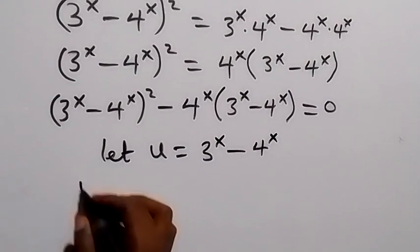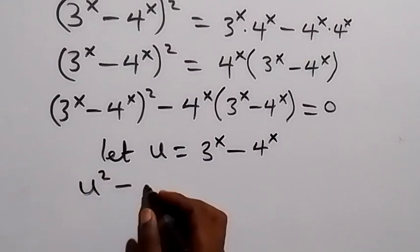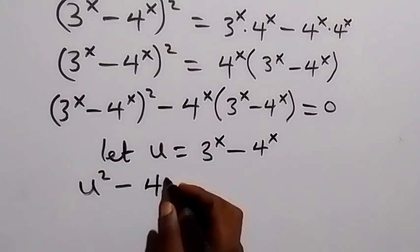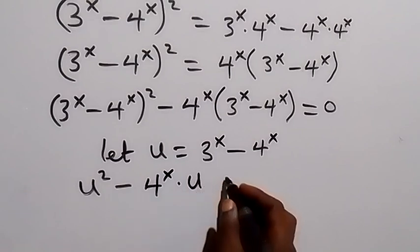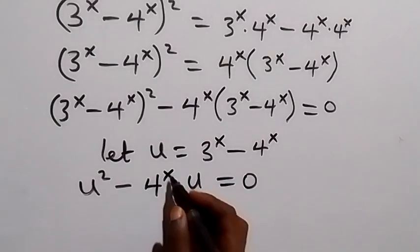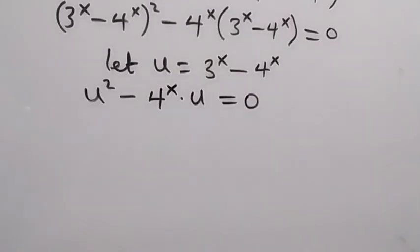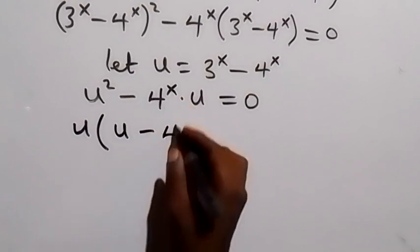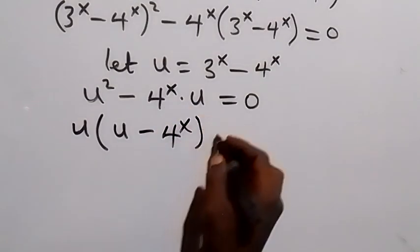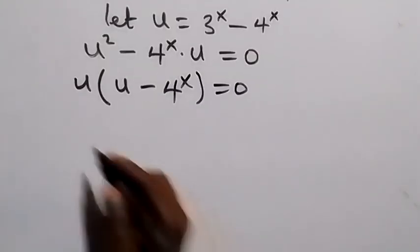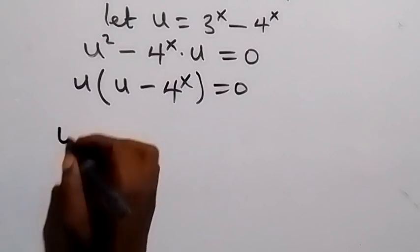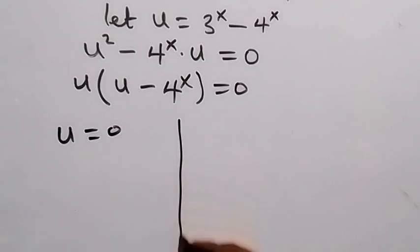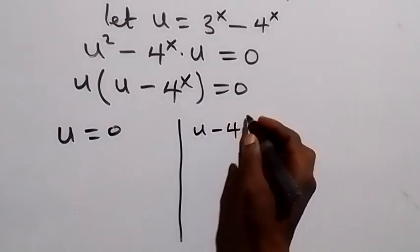Factoring u out, we get u times (u minus 4^x) equals 0. From here there are two cases: either u equals 0, or u minus 4^x equals 0.